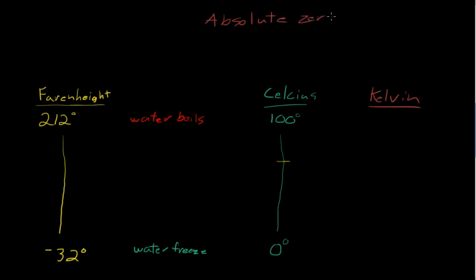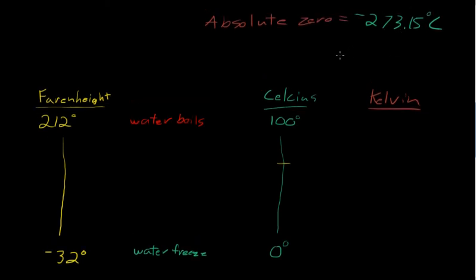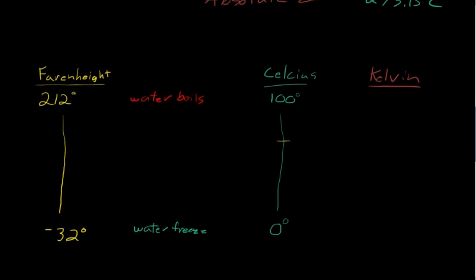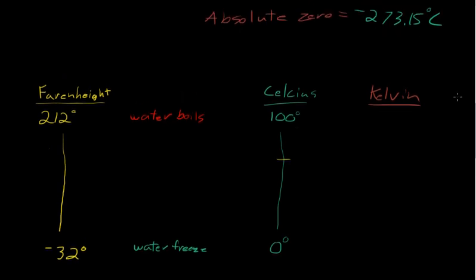Absolute zero is the coldest possible temperature, at least theoretically. I don't think we've ever reached it. According to our calculations, the lowest possible temperature is minus 273.15 degrees Celsius. That's very, very unimaginably cold. This is when all motion stops inside of a substance - even the electrons stop orbiting the nucleus. It's theoretical,